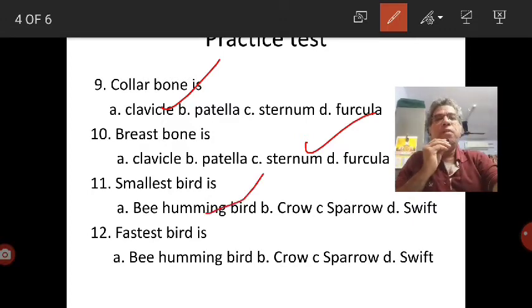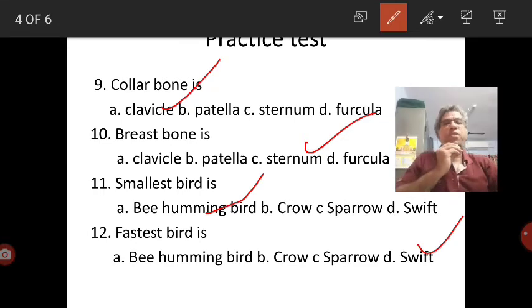Smallest bird is hummingbird. Fastest bird is swift.